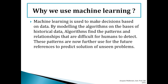Machine learning is used to make decisions based on data by modeling algorithms on the basis of historical data. Algorithms find patterns and relationships that are difficult for humans to detect. These patterns are then used for future reference to predict solutions to unseen problems.